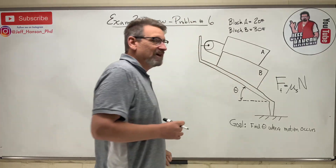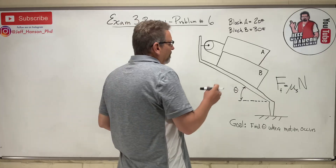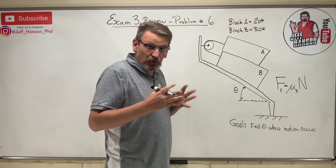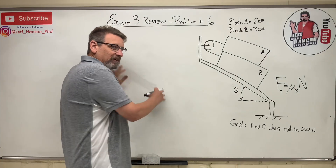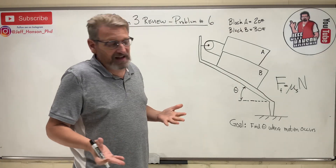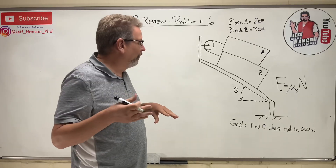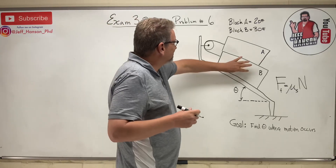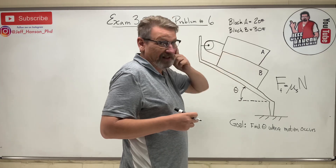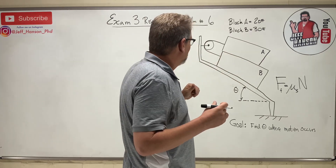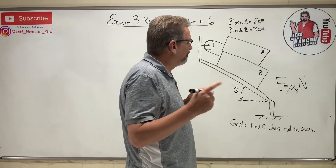We're going to use mu times N — friction is fun. Step one: you've got to assume a direction that things are going to happen, then base your free bodies on that. If you assume wrong you'll get a negative; if you assume right you'll get positive. To me it makes sense that block B is heavier — I think he'll slide down and block A will slide up.